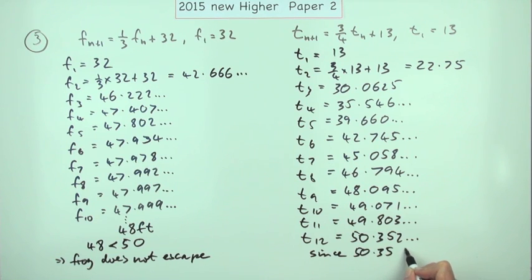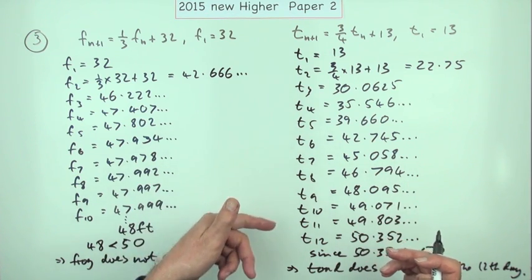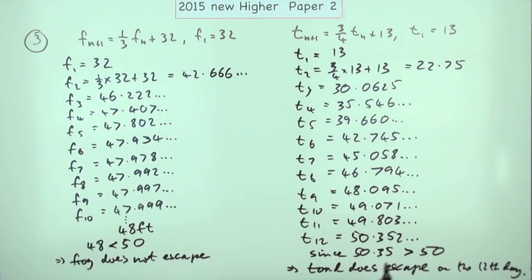Since 50.35 is greater than 50, that means the toad does escape. In fact you go further this way and say on the 12th day. How are the marks allocated this time for this? Well you look at the marking scheme and see if you can make sense of it. There's no point even attempting to explain it.